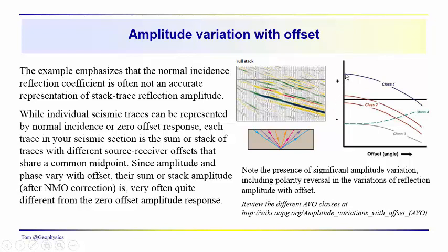As we sum together all the traces in the stack, we go from positive amplitude on the near offsets to negative amplitudes on the far offset. They all get summed together, so the reflection amplitude is likely going to be somewhere in this region on average.